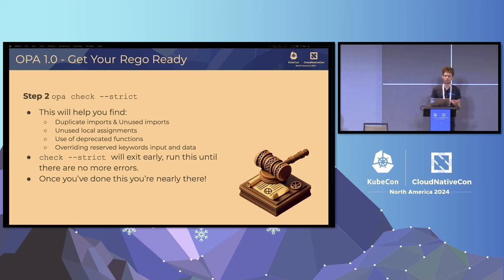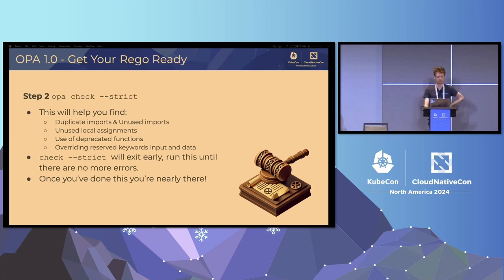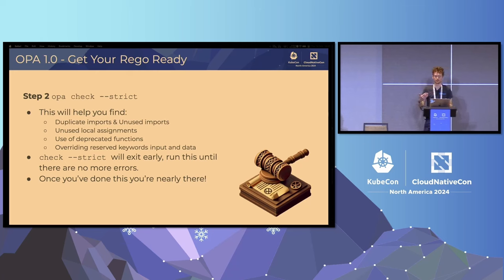The next step is to run OPA check with the strict flag. Many of the strict check recommendations will become required in OPA 1.0, and this is a good way to address them prior to upgrading. Duplicate imports and unused local assignments are no longer going to be allowed, and use of deprecated functions will be flagged by this check. One thing to note: when you fix the recommendations from OPA check strict, you'll need to run it again to allow it to continue and make checks on other files, because it exits early. Keep running it until you don't get any errors. If you're working with a particularly old Rego code base, once you've got past this stage, you've done the bulk of the work.